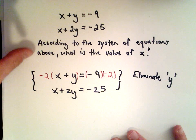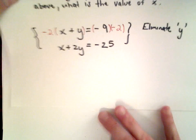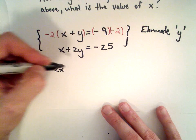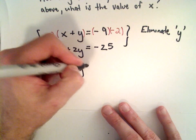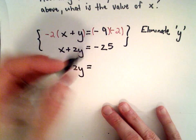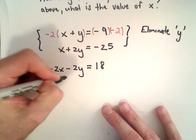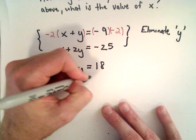So if I distribute on the left, I'll have negative 2x. Negative 2 multiplied by positive y is negative 2y. Negative 9 multiplied by negative 2 will give us positive 18. I'm not doing anything to the second equation.